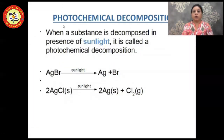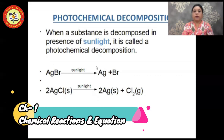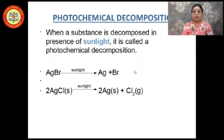The next type is photochemical decomposition. As mentioned, 'photo' means light, so when a substance decomposes in the presence of sunlight, it is called photochemical decomposition. For example, silver bromide (AgBr) in the presence of sunlight breaks down into silver and bromine gas. Silver chloride similarly decomposes to give silver and chlorine gas. Note that this equation is not balanced — please refer to your textbook for the balanced equation.